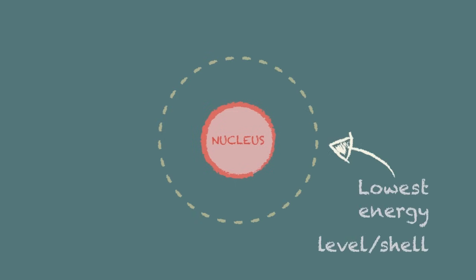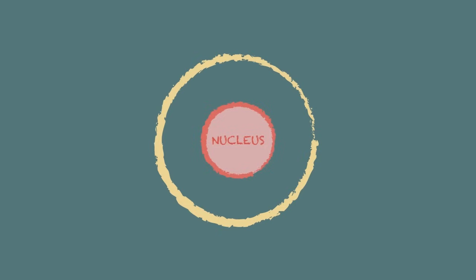In our diagrams the shell nearest the nucleus is going to represent the lowest energy level or shell and we draw a circle to depict each shell. We use a dot or a cross to represent each electron and we'll represent the nucleus by the chemical symbol.